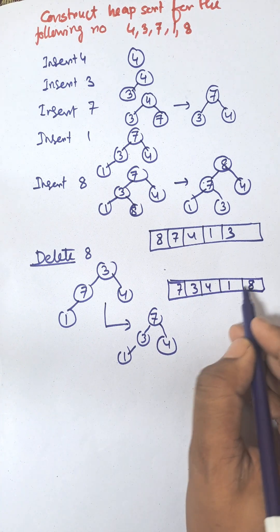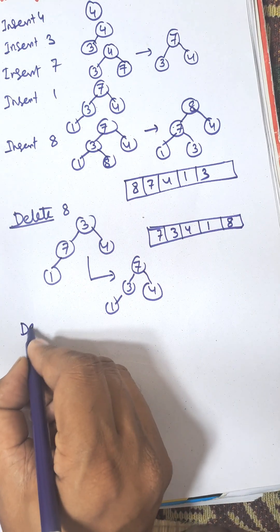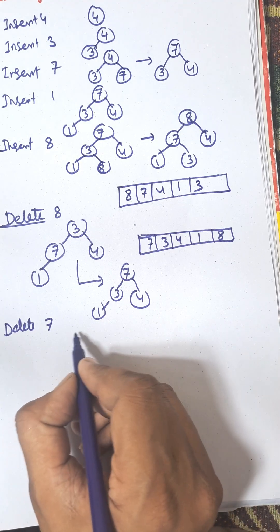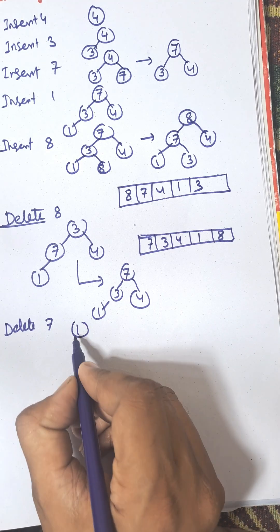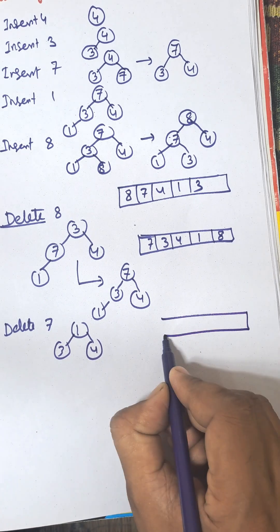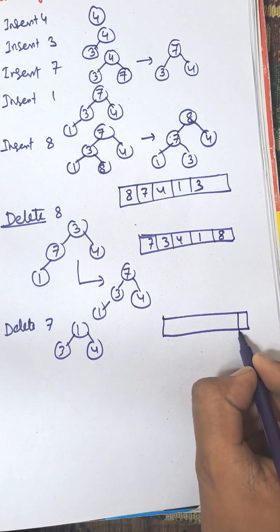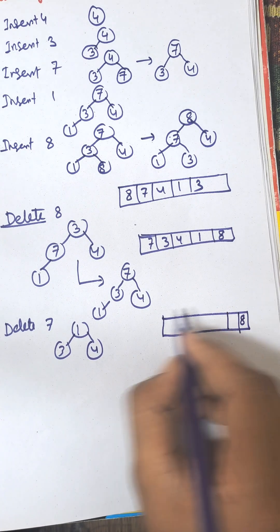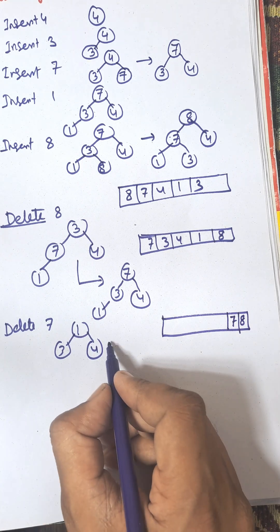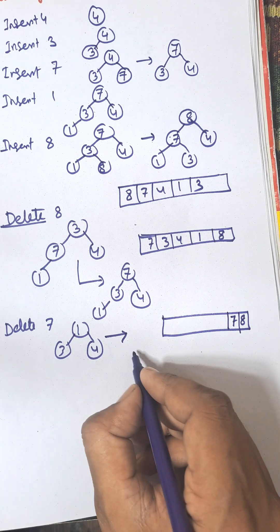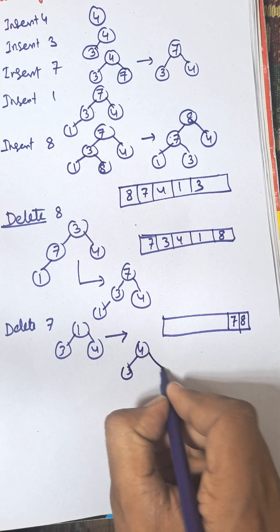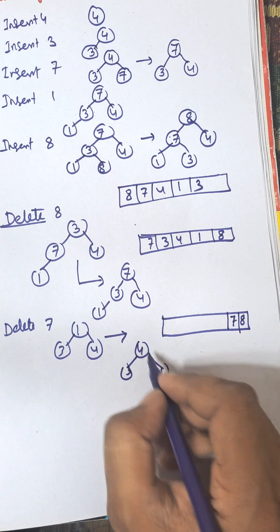The array is now 7, 3, 4, 1, with 8 transferred to the last location. Now delete 7. The last node 1 will be the temporary root. The tree becomes 1, 3, 4, and 7 goes to the last position of the array before 8.